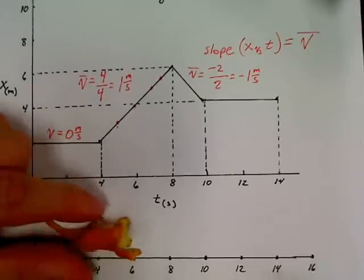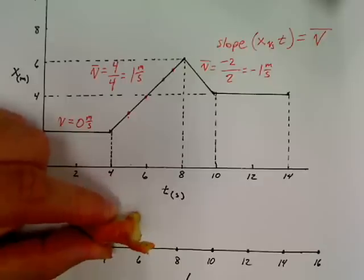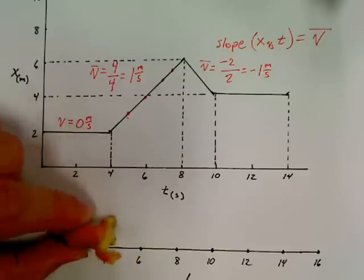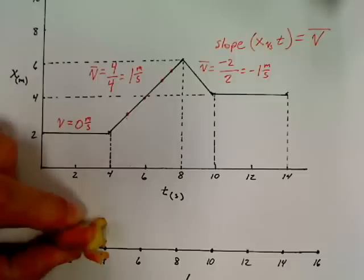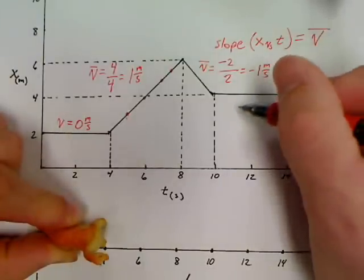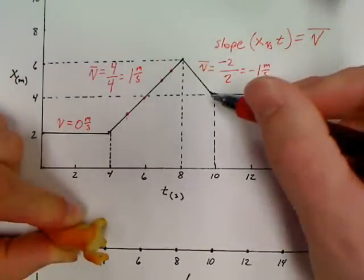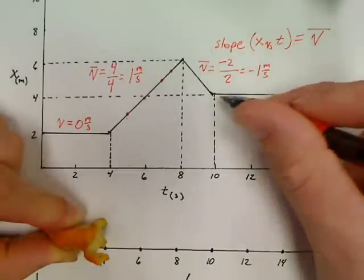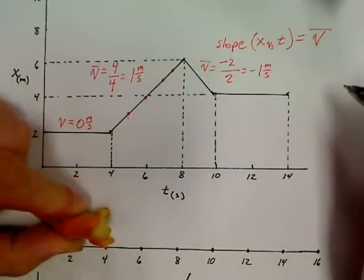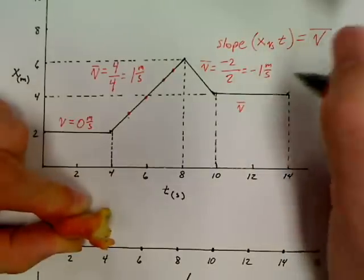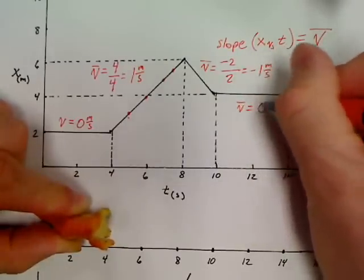If you look, the dinosaur has a negative velocity. This is a vector, which means it has magnitude and direction. My dinosaur begins to move in a negative direction at this point, so the negative velocity makes perfect sense. After 10 seconds, what is the velocity? At 12 and 14 seconds, he never moves again — he stays right there — which gives an average velocity of 0 for the last leg of this trip.